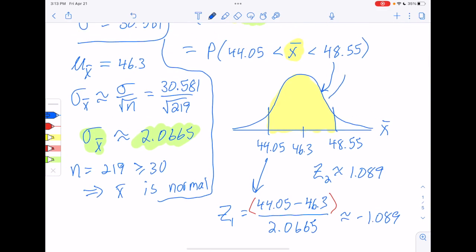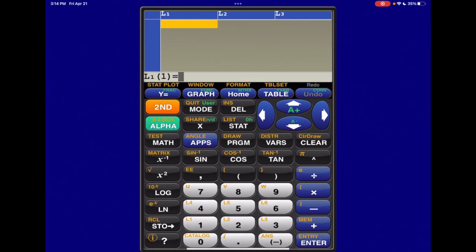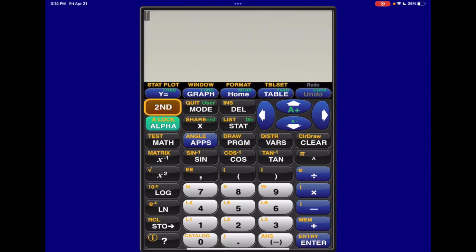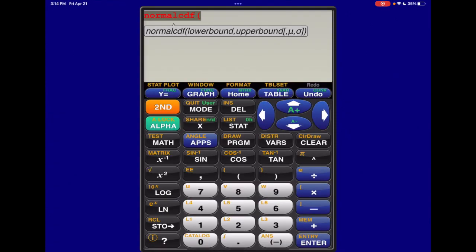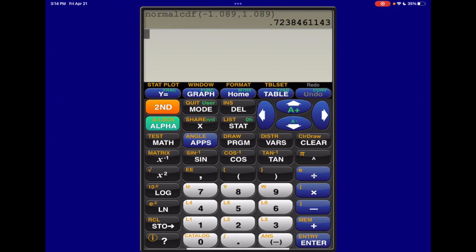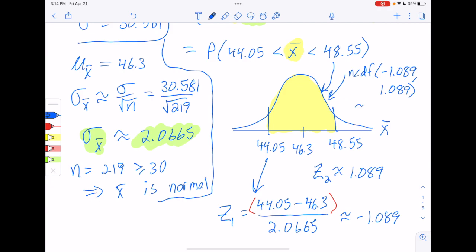So what does that mean? It means that we can find that area using normal CDF. And for our normal CDF, we want the left z-score to be negative 1.089, and on the right, positive 1.089. So let's switch over to the calculator and do that last bit. We want to go into the distribution menu, second distribution, and then we want normal CDF with a left boundary of negative 1.089, right boundary equal but opposite 1.089. And then we usually put four decimal places on a probability. So that would be 0.7238.